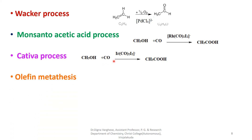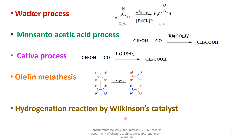Another example is olefin metathesis, where olefins interchange to produce new types of olefins in the presence of a catalyst. Another reaction is hydrogenation by Wilkinson's catalyst, where terminal alkenes undergo hydrogenation and form a saturated product in the presence of Wilkinson's catalyst. These are some examples of homogeneous catalyst reactions.